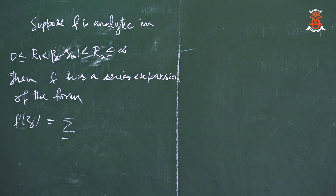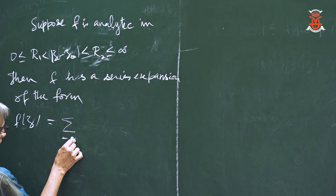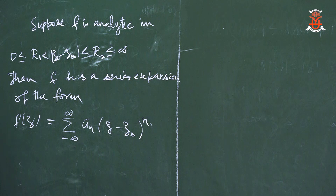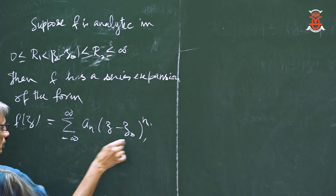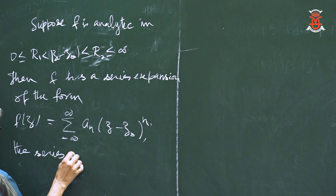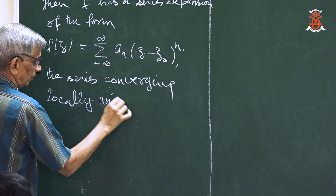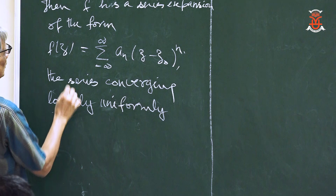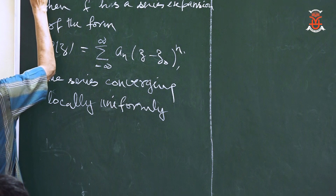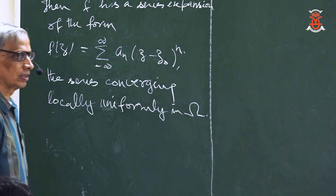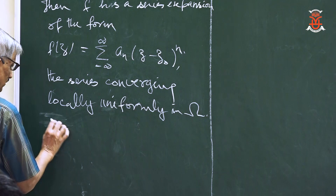Either you have a hole at z₀ or you have an annulus with center at z₀. The series converges locally uniformly. Such an expansion is unique.